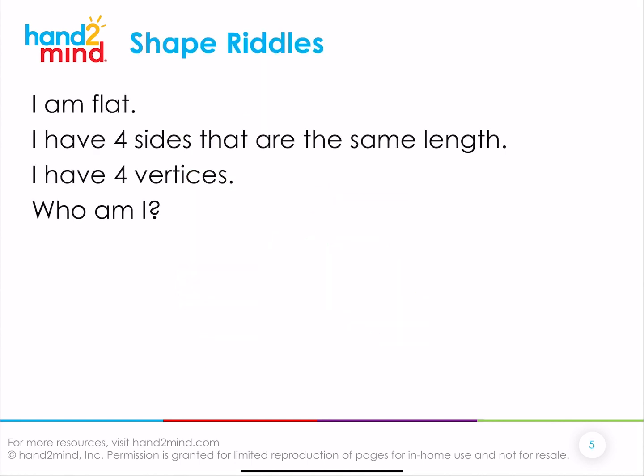So now we're going to do some shape riddles. I'm going to give you some attributes, some characteristics of the shape, and you're going to guess which shape it is. If you have some shapes in front of you, you can use those to help you. Here's the riddle: I am flat. I have four sides that are the same length. I have four vertices. Who am I? Did you say a square? Yes, I'm a square — I have those four sides all the same length, and I have those four vertices. And it's flat.